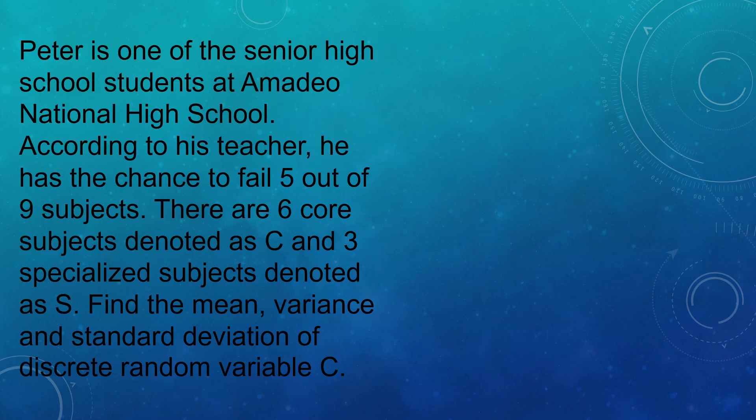Now, let's have the first problem. Peter is one of the senior high school students at the Madeo National High School. According to his teacher, he has the chance to fail 5 out of 9 subjects. There are 6 core subjects denoted as C and 3 specialized subjects denoted as S. Find the mean, variance, and standard deviation of the discrete random variable C. The first thing we will do is find the values of random variable C.